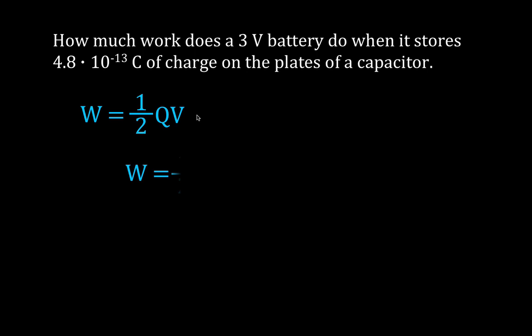We'll get rid of the other two and we're simply going to plug these values in. It's pretty straightforward. The work is equal to one half, the charge is 4.8 times 10 to minus 13 coulombs, the voltage is 3 volts. And you can see that the battery does 7.2 times 10 to minus 13 joules. That is how much work the battery does when it stores that much charge using that 3 volt battery.